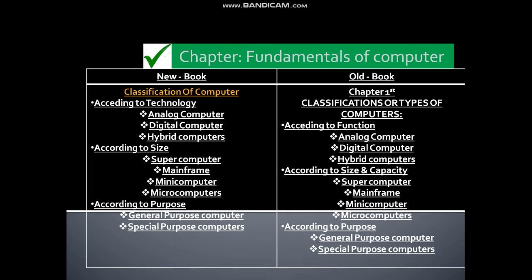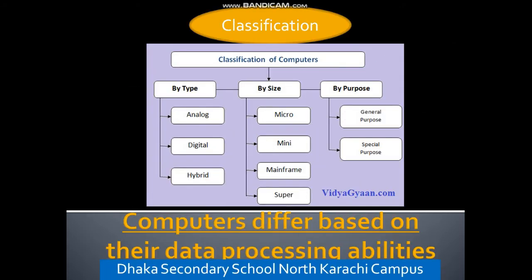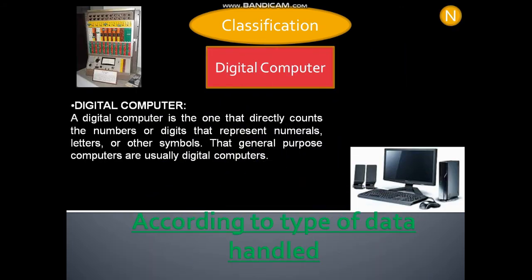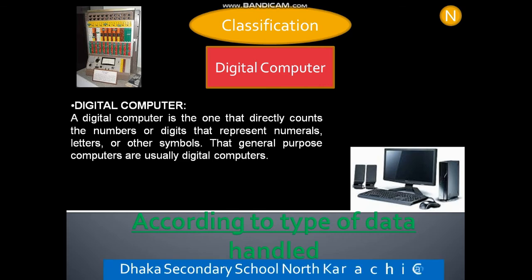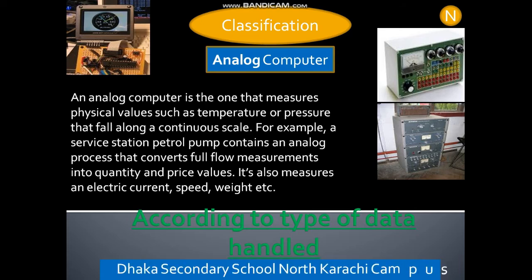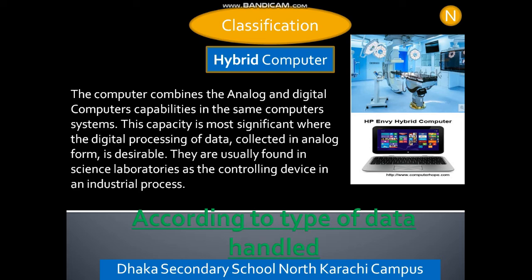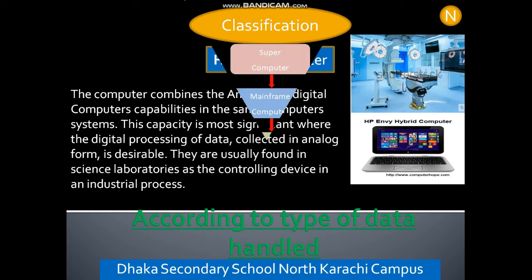Classification of computers: according to technology, size, and purpose. A digital computer is one that directly counts numbers or digits that represent numbers, letters, or other symbols. An analog computer measures physical values such as temperature or pressure that fall along a continuous scale. A hybrid computer combines the analog and digital computer capabilities in the same computer system.